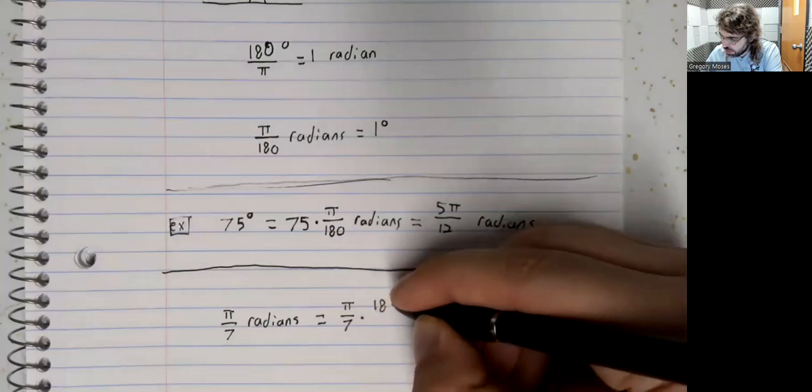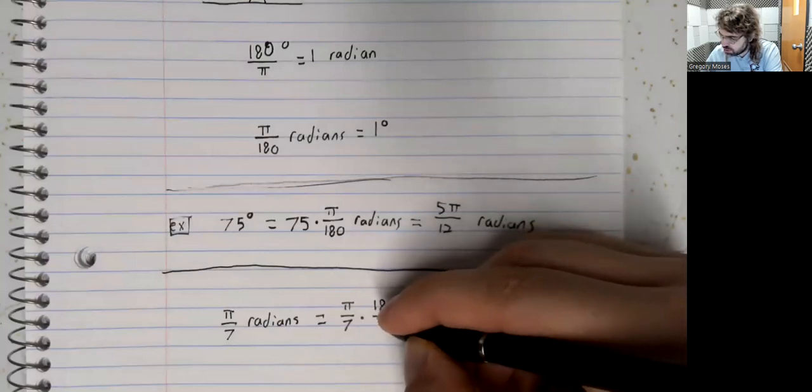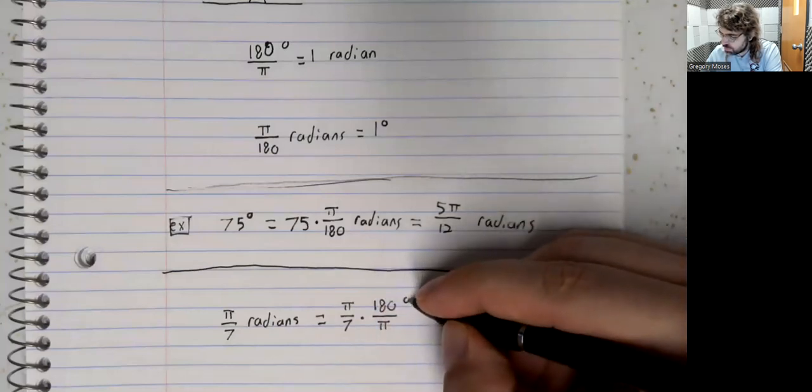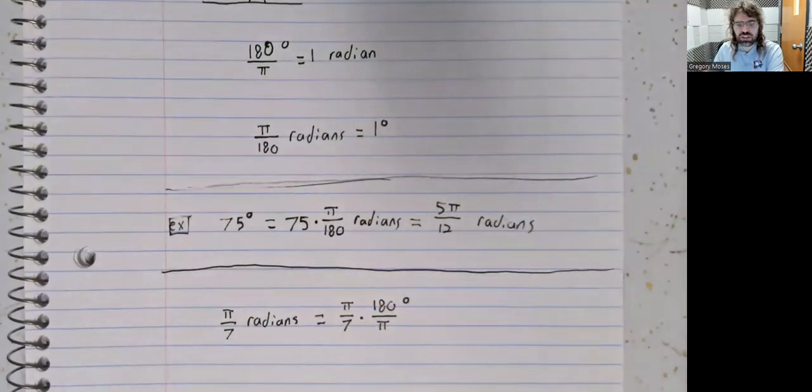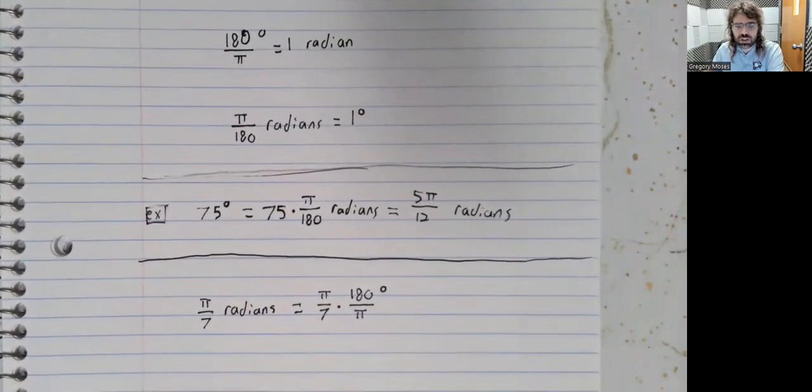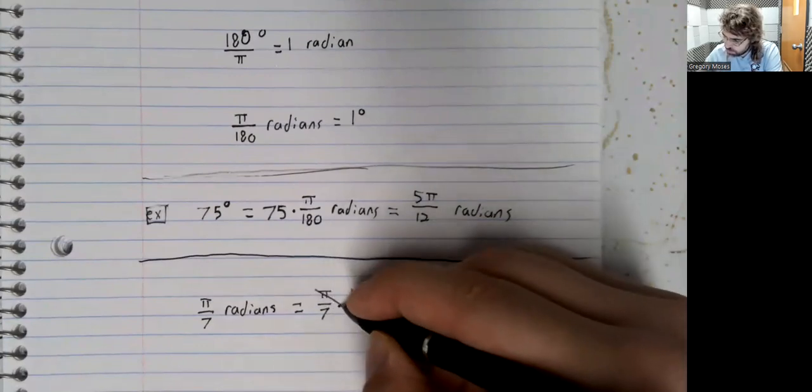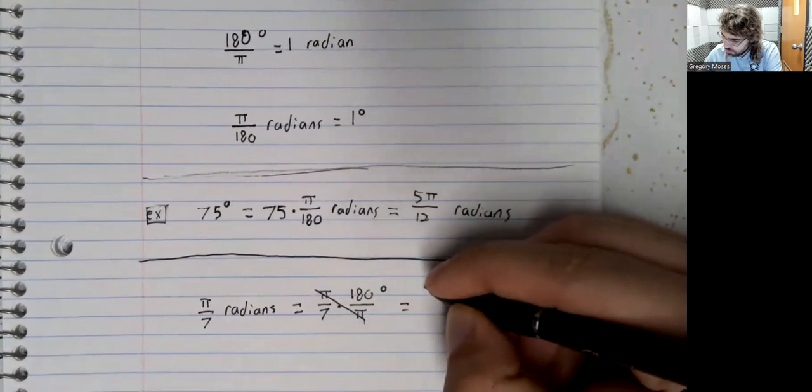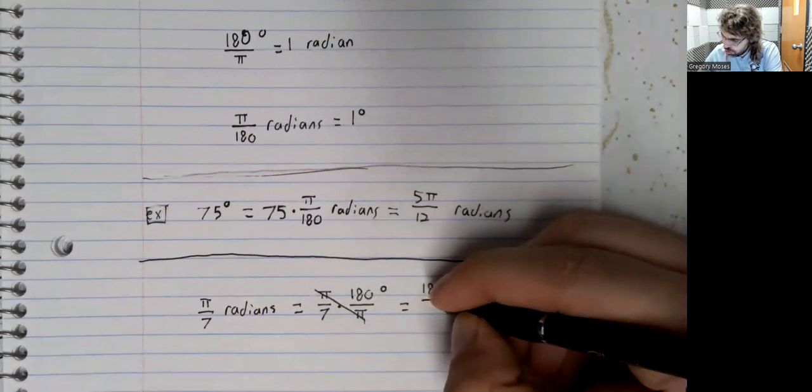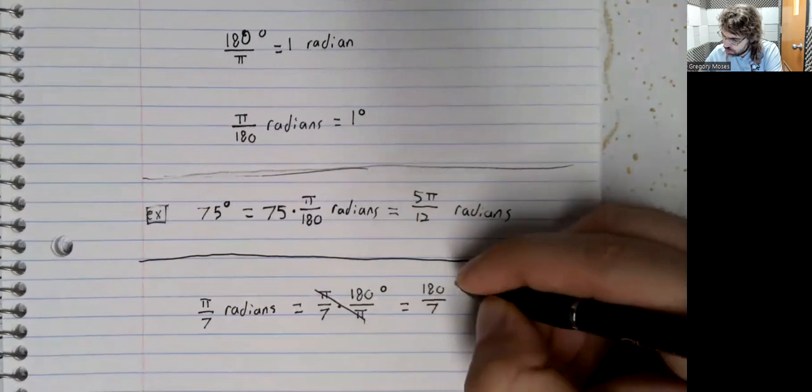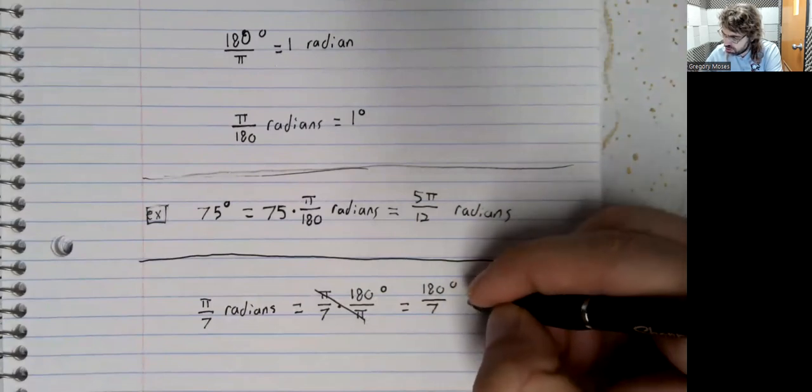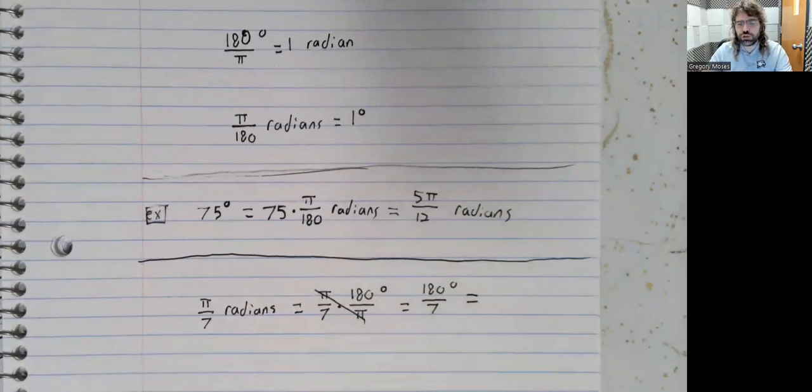Remember the degree symbol - radians don't have a symbol, but degrees do. As a fraction, this doesn't simplify. For degrees, it would be most common to do this division and get a decimal approximation.